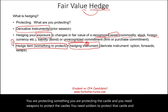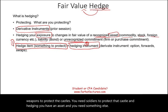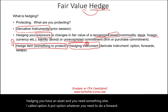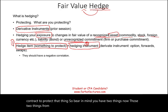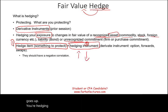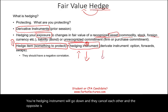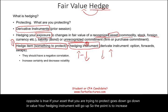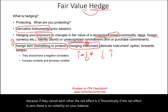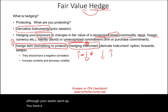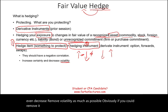From an accounting perspective, those two things will have a negative correlation. If your asset that you are protecting goes up, your hedging instrument will go down, and they cancel each other. The opposite is also true: if your asset goes down in value, your hedging instrument will go up. The point is to increase certainty — if they cancel each other, the net effect is zero and there is no volatility on your balance sheet. You're trying to remove volatility as much as possible. A perfect hedge means the net effect is zero.